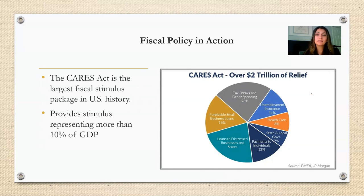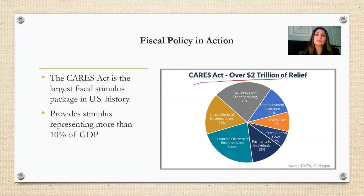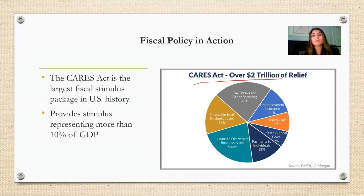The CARES Act is the biggest fiscal stimulus package in modern American history, providing monetary stimulus of about 10% of the GDP. The aim was to provide economic relief to consumers, businesses, and state and local governments affected by the economic shutdown, while also allocating funds to help contain the COVID-19 virus.